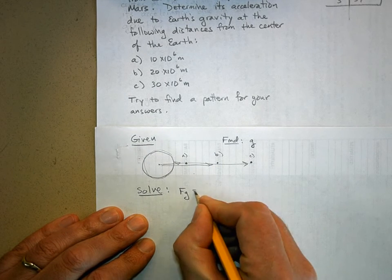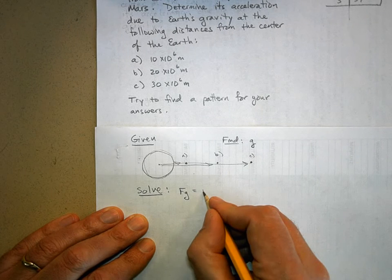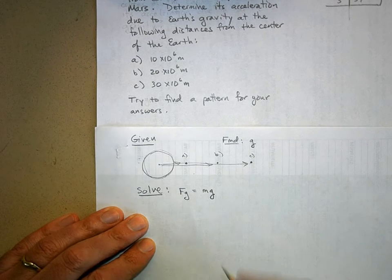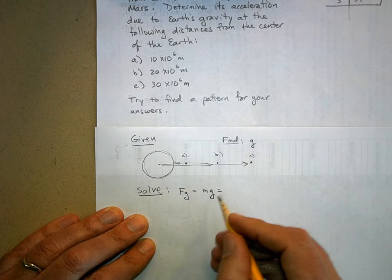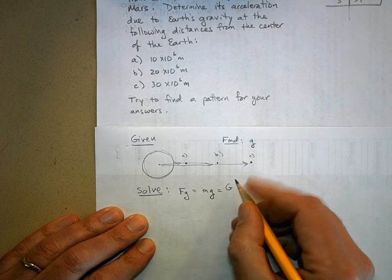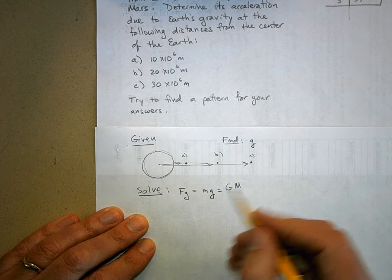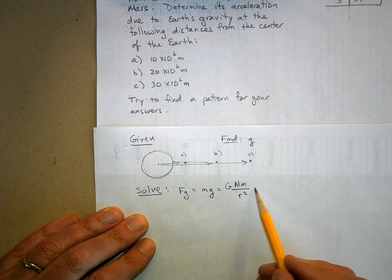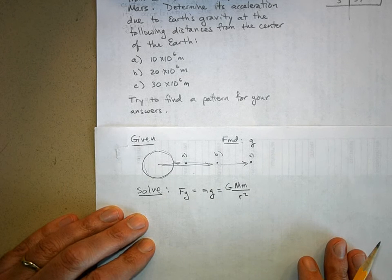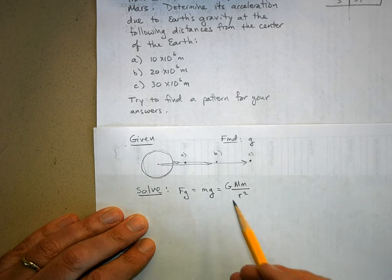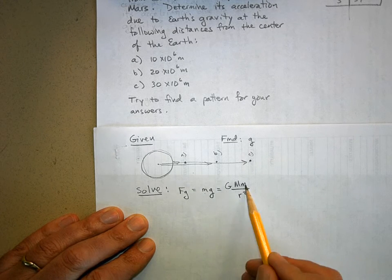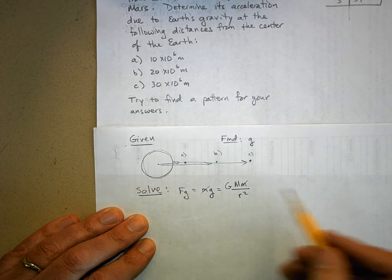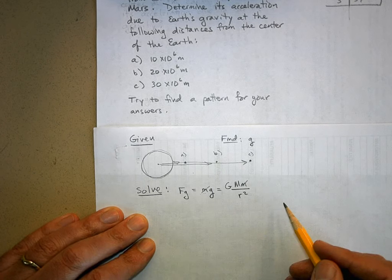For part A, the force of gravity on any massive object is the mass of that object times the acceleration of gravity, or the gravitational field strength. Set that equal to G times the mass of the Earth times the mass of my spacecraft divided by r squared. This is Newton's law of gravity, and this little m will cancel out.